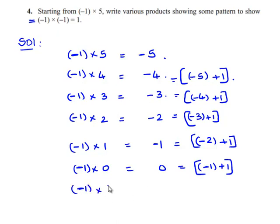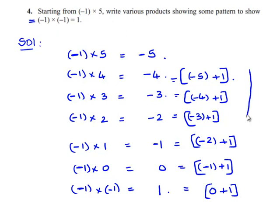Decreasing by yet another value: negative 1 times negative 1 — 1 into 1 gives 1, and as the signs are similar we get positive 1. This can be written as 0 plus 1. So following this pattern, negative 1 times negative 1 equals 1. We can also see that 0 plus 1 equals 1, therefore negative 1 times negative 1 is equals to 1.